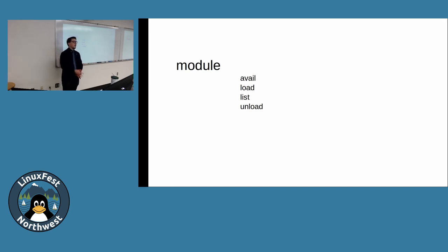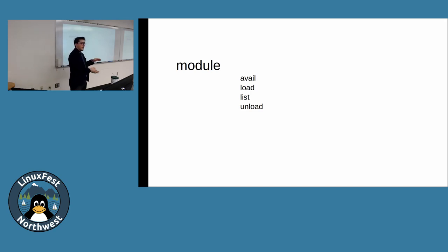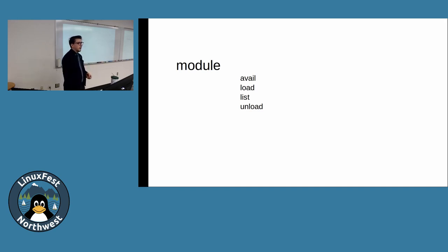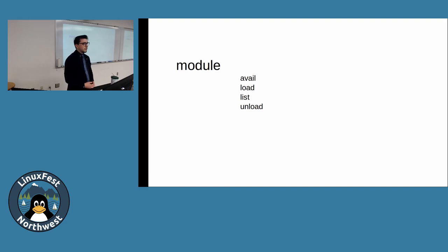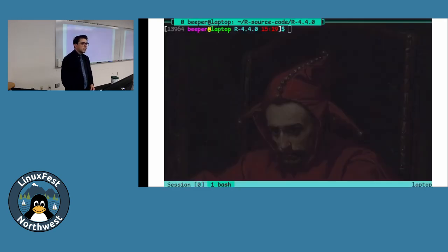Modules is written well enough that when you unload a module, it automatically undoes all those prepended paths — it pops them right out of your environment. You don't have to manually tell it what to undo; it knows to do that because it tracked what it prepended when it loaded. So let's look at actually running this software from modules.